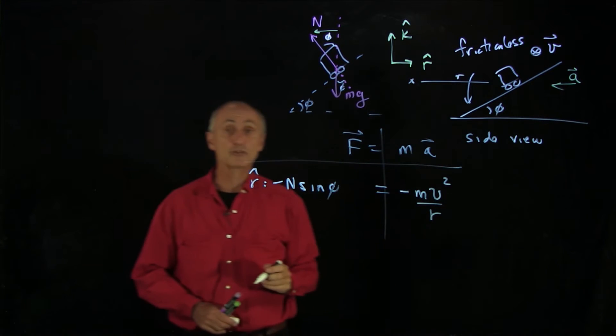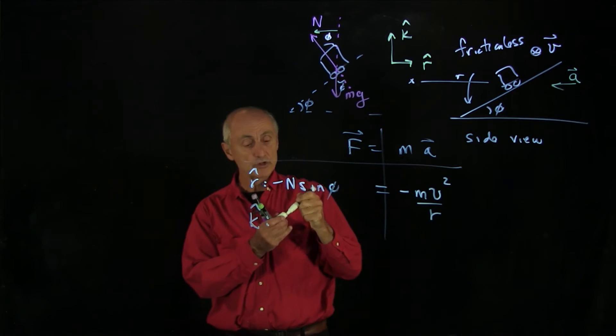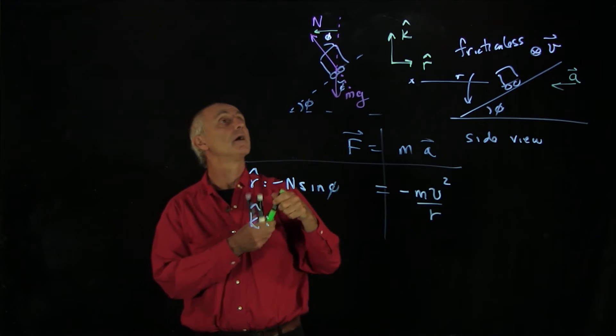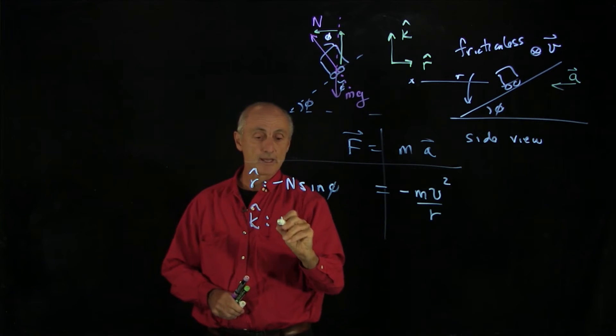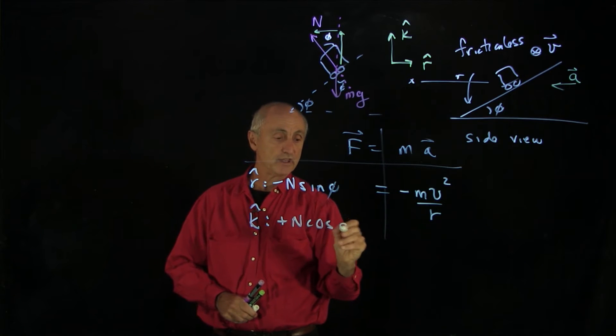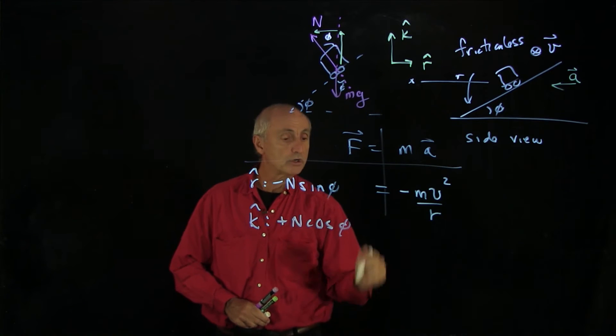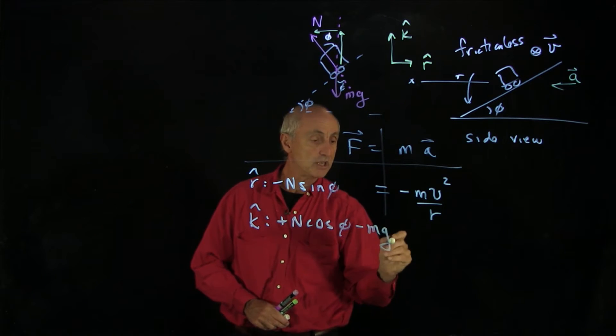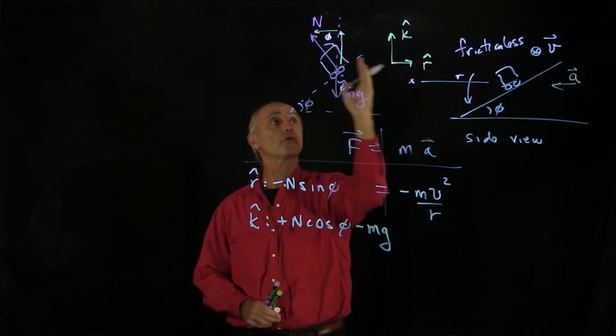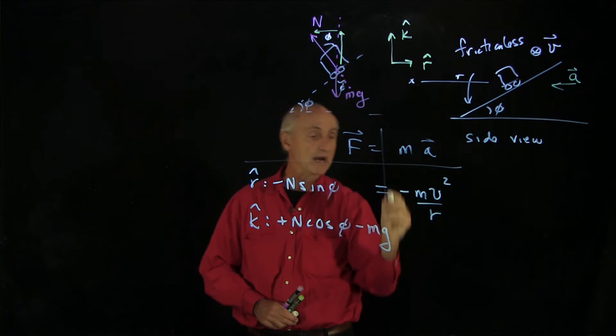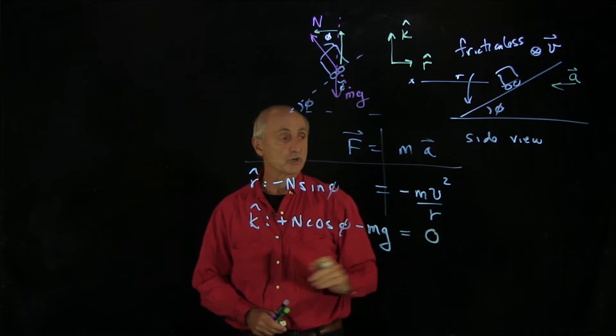For the k hat direction, we have a component of the normal force that's pointing up. That's adjacent to the angle, so we have plus N cosine phi. And we have the gravitational force downward minus mg. As far as the vertical direction goes, because the car is going in a circle, there is no acceleration up or down in the vertical direction. That's a constraint in this problem. That's equal to zero.